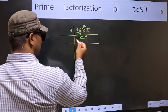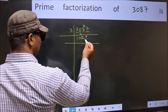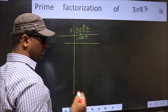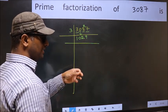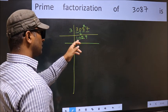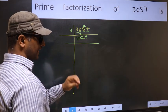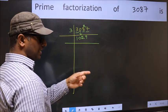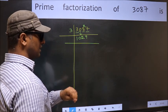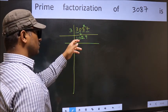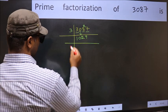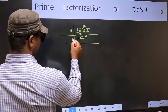Now to check whether 1029 is divisible by 3 or not. For that, add the digits: 1 plus 0 plus 2 plus 9 equals 12. And 12 is divisible by 3, so this number is also divisible by 3. So take 3 here.